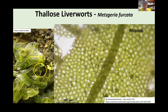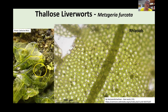One interesting feature of thalloid liverworts is that they have rhizoids — structures that help the plant anchor itself to the substrate. They're a bit like roots, but they don't absorb water; they just anchor the plant. The long hair-like structures visible in the picture on the right are the rhizoids of a thalloid liverwort, and in the yellow circle on the left you can see rhizoids sticking out from underneath the thallus. In liverworts, rhizoids are unicellular structures, whereas in mosses they have more than one cell.